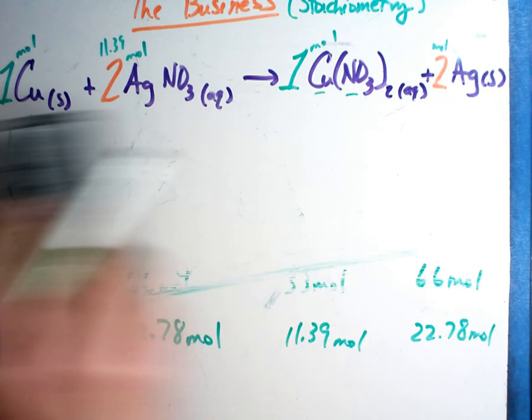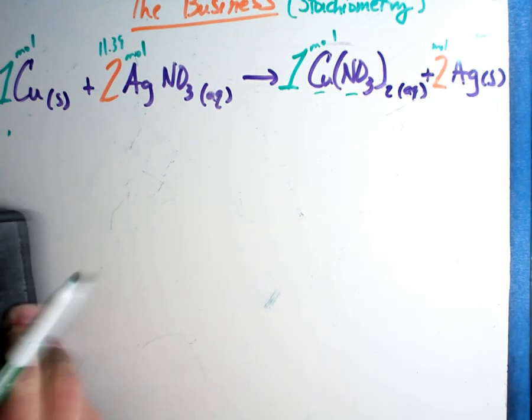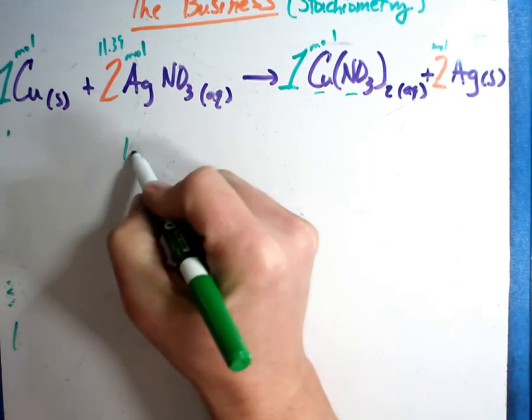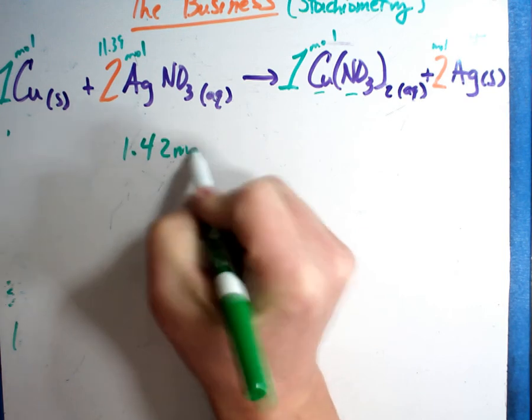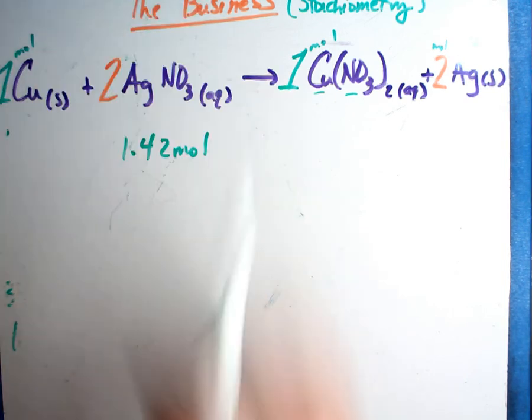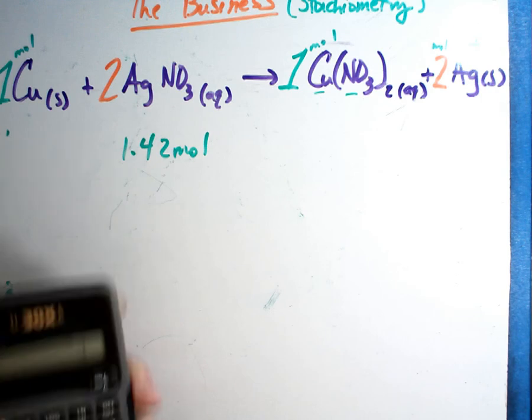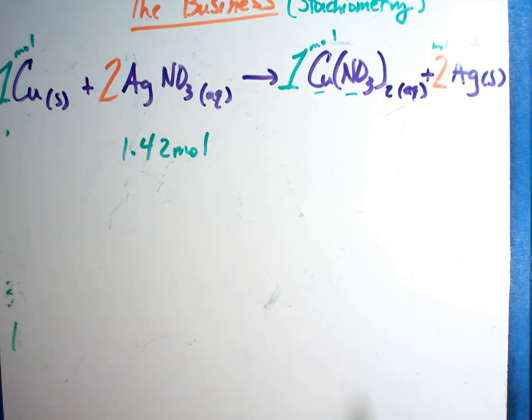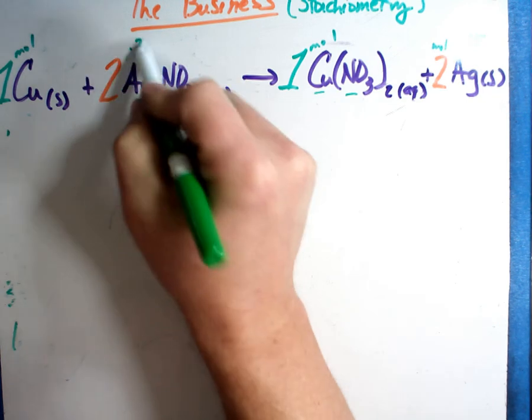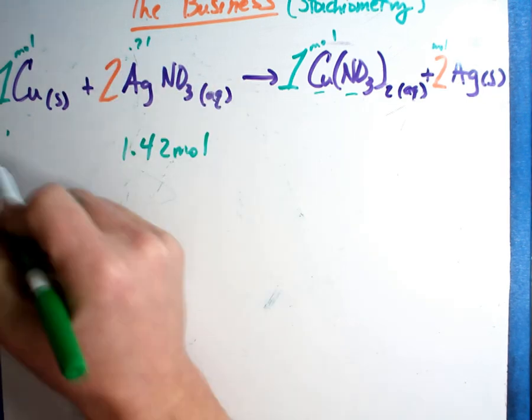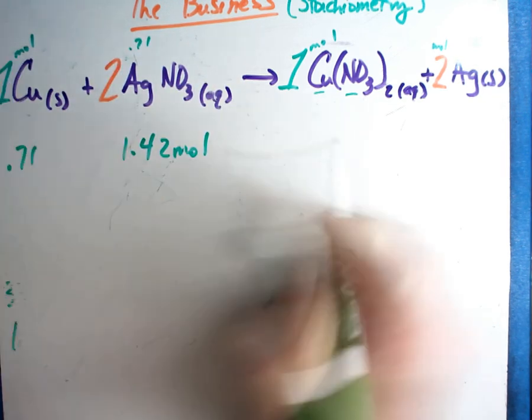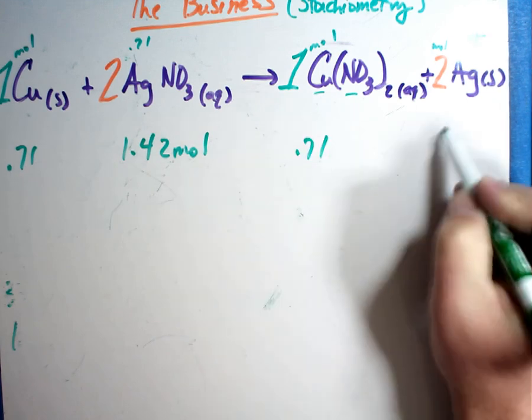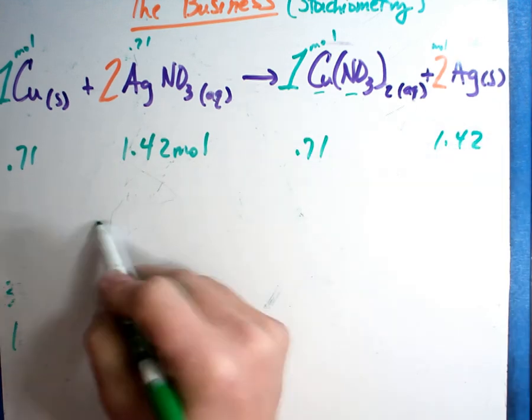So, what if I had this 1.42 moles and I needed to know everybody else. Well, 1.42 divided by 2 is equal to 0.71. 0.71 is the change. Take the 0.71 times this is 0.71. This one's 0.71 and this one's 1.42.